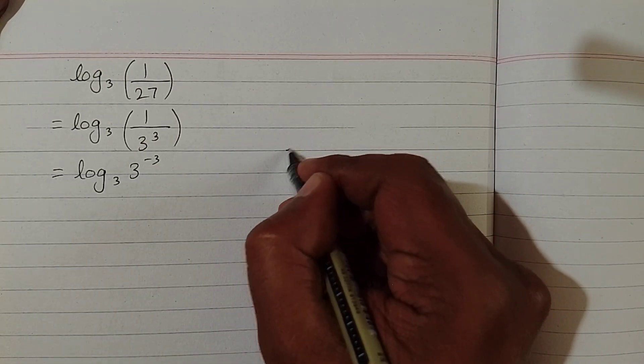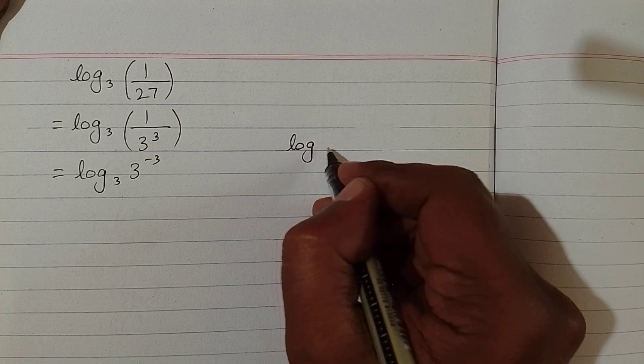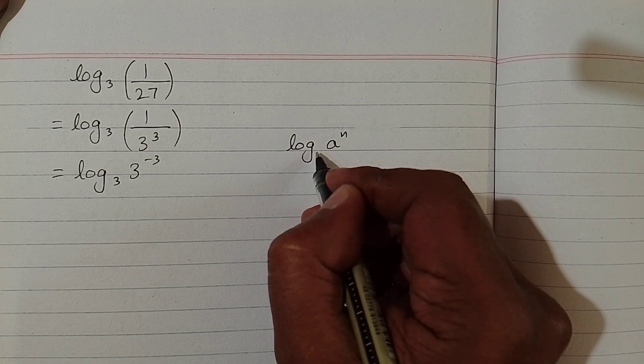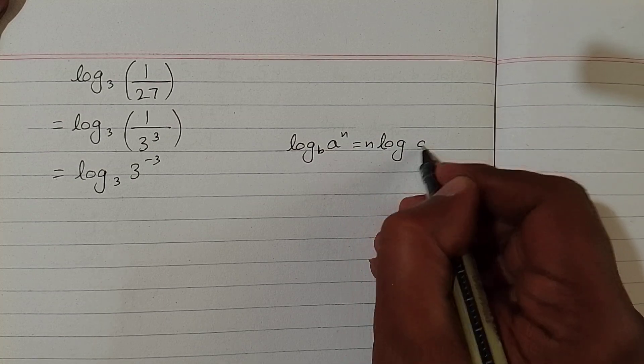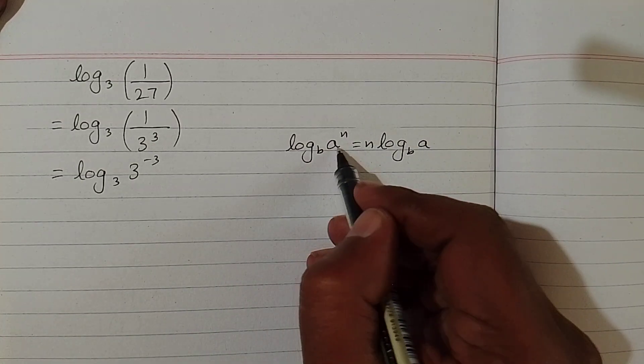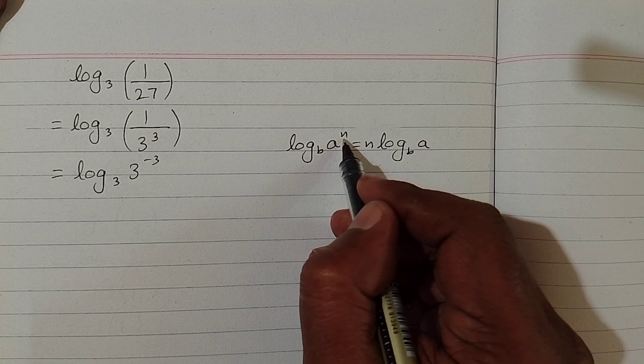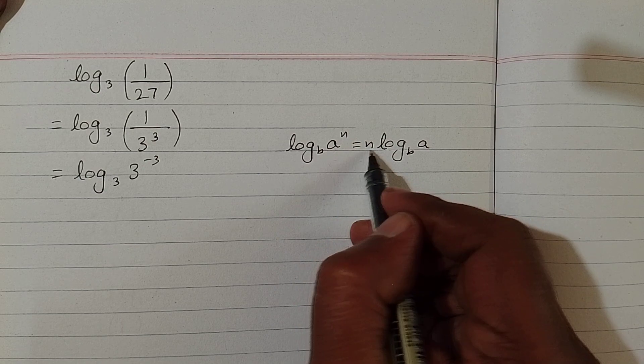Now we use a rule of log called the power rule: log of a to the power n to the base b equals n times log of a to the base b. That is, if we have a power on this number, then this number can be written before the log.